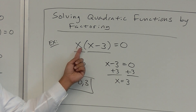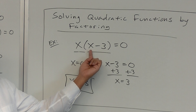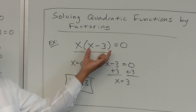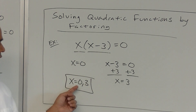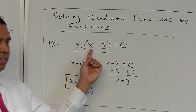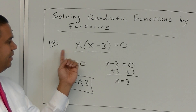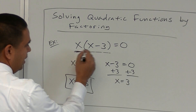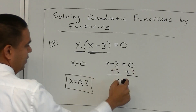If you put zero in and multiply, you still get zero — because zero times negative three is still zero. And if you put three in, three minus three is zero, so x times zero is zero. They're both solutions. The zero product property says: multiply these two factors and you get zero, so one of them has to be zero. There are our two answers.